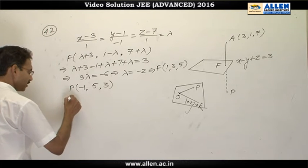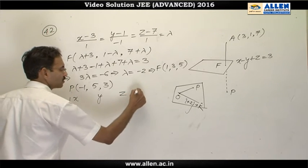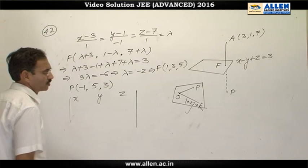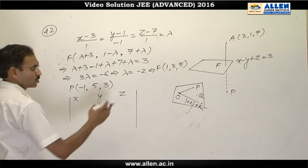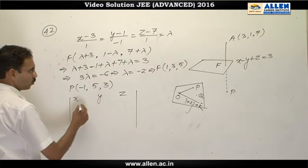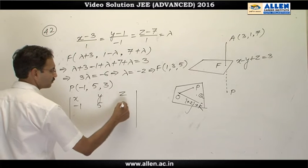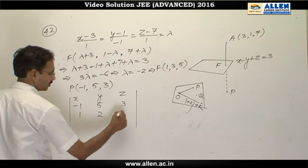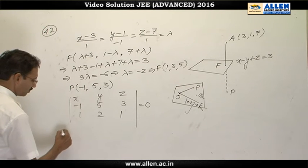For that I will say the equation of plane is (x-0, y-0, z-0). This is a vector. The variable point Q I have taken as (x,y,z), so OQ vector, then OP vector. OP vector will be (-1,5,3) and (1,2,1) vector. This equals 0 is the desired plane. Let us solve this determinant.